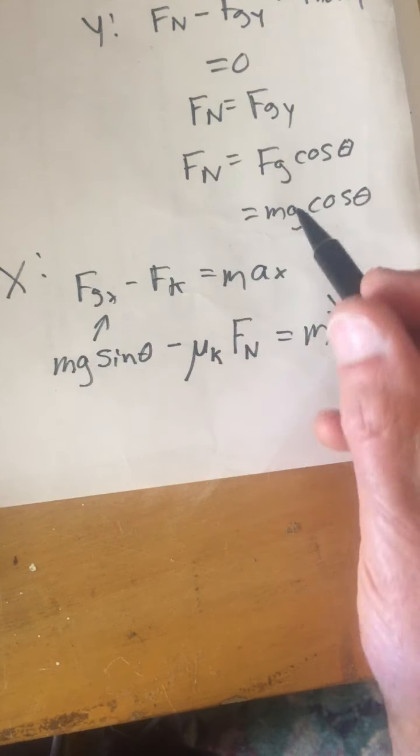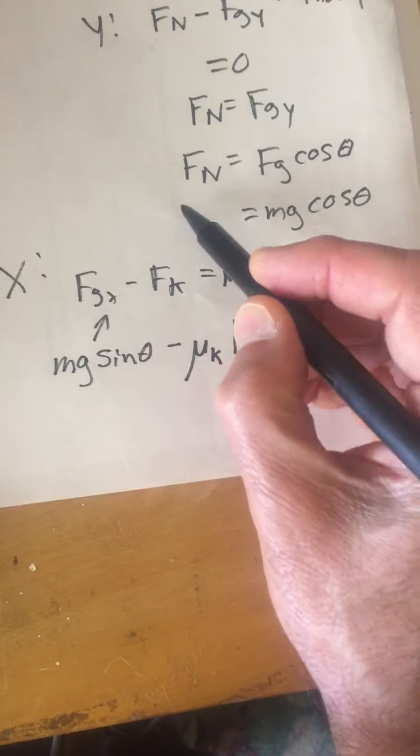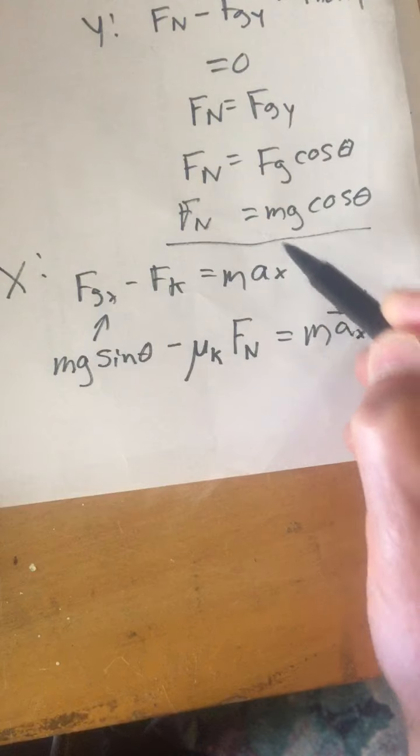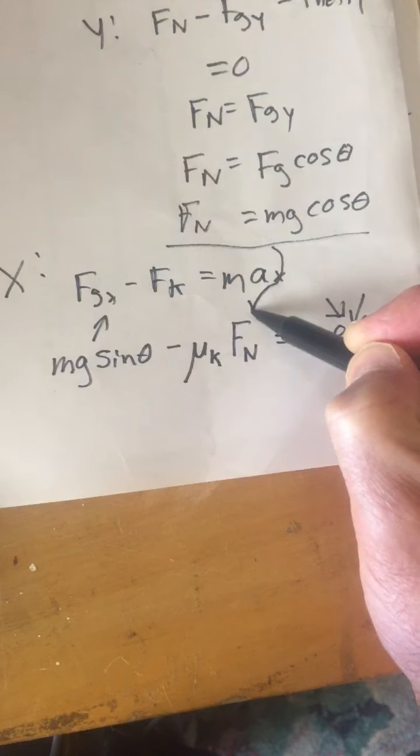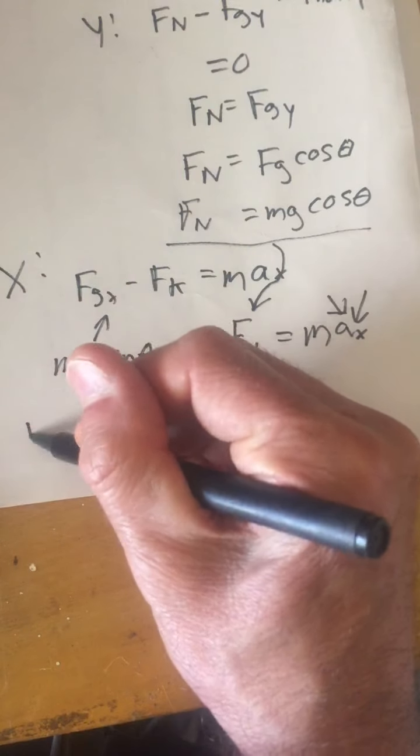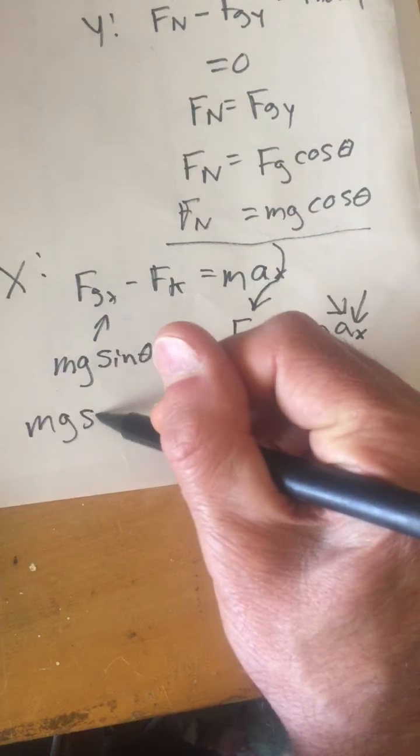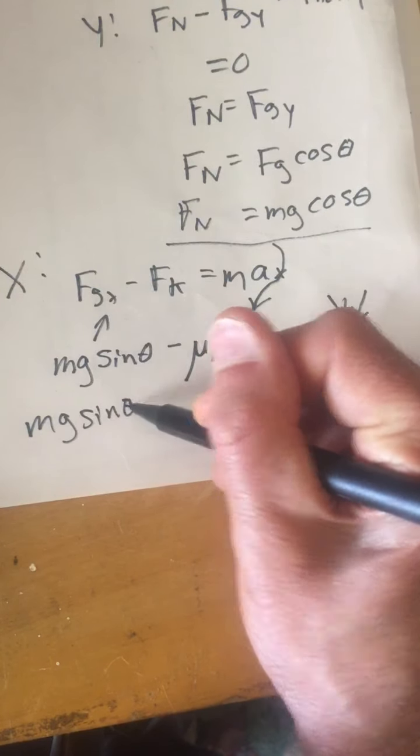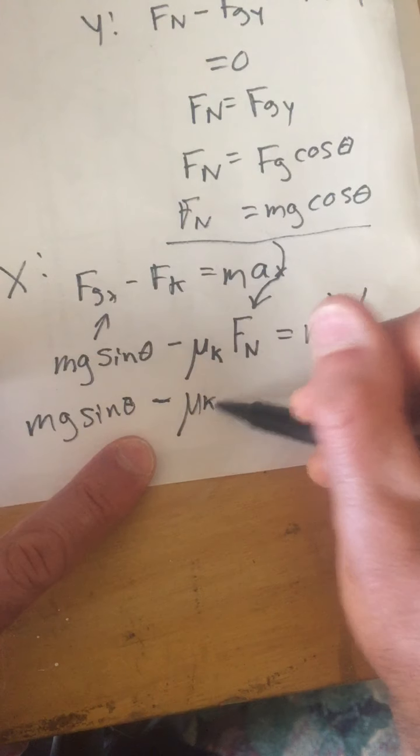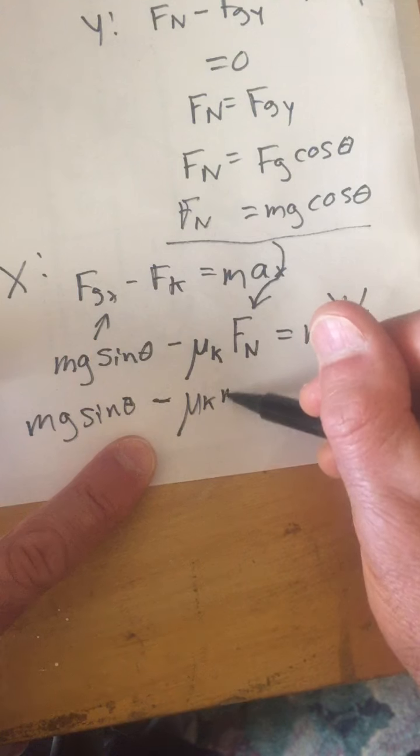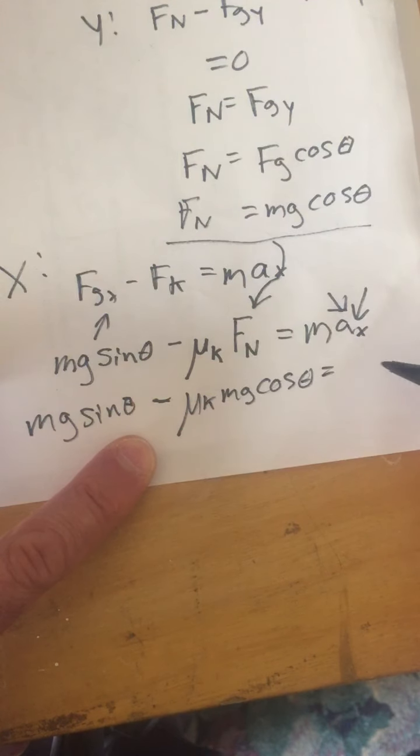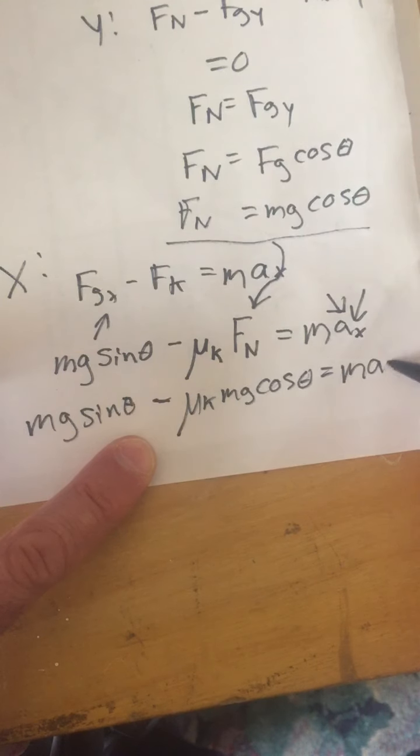Now I can use this result for Fn, which is also Fgy, and plug it into this equation right here. So what I'm going to get is mg sine theta minus mu K times mg cosine theta equals m ax.